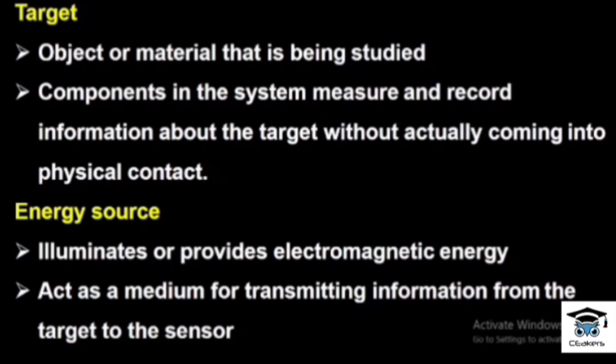The second component is the energy source. It illuminates or provides electromagnetic radiation or energy. This radiation acts as a medium for transmitting information from the target to the sensor. That is why we use electromagnetic radiation — everything flows through the sensor via electromagnetic means.